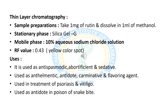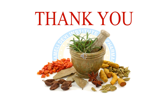The therapeutic uses of rutin include use as an antispasmodic, abortifacient, and sedative. It is used as an anthelmintic, antidote, carminative, and flavoring agent. It is used in treatment of psoriasis and vitiligo, and as an antidote in poisoning from snake bite. Thank you so much friends for listening, and I hope this will be beneficial for information regarding isolation, identification and analysis methods for glycoside-containing crude drugs and phytoconstituents, namely glycyrrhizinic acid and rutin.